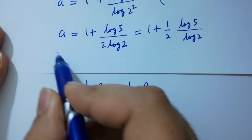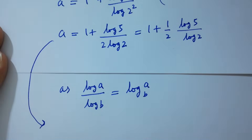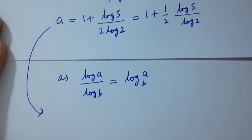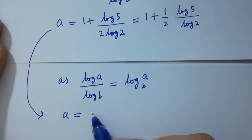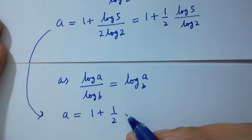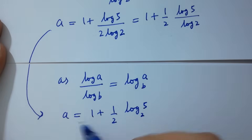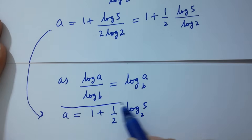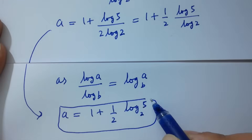Therefore, a will be equal to 1 plus one half log 5 to the base 2, which is the value of a.